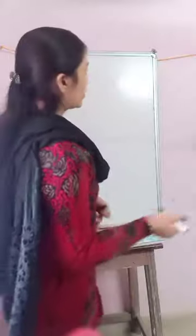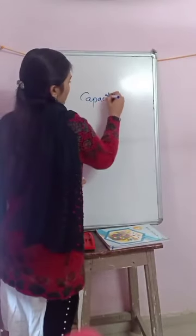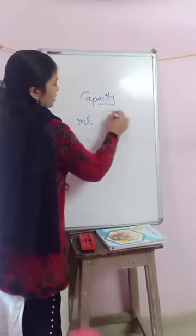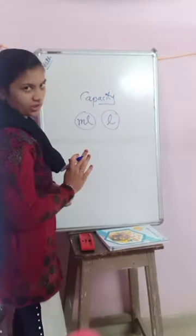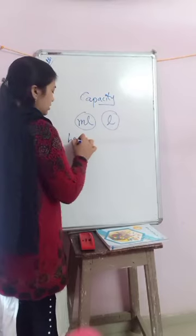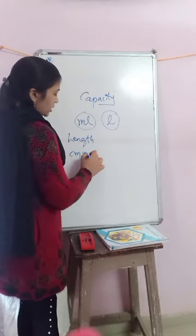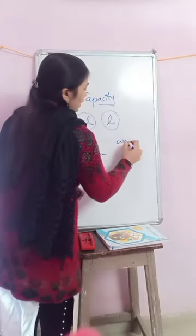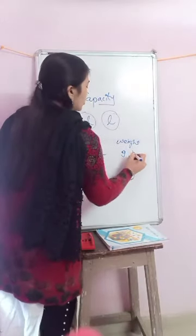In one, we are learning about capacity. There are two units for capacity. First is the milliliter and second is the liter. Milliliter is the smaller unit, liter is the larger unit. We are also learning in length: centimeter, meter, and kilometer. Then in weight, gram and kilogram.